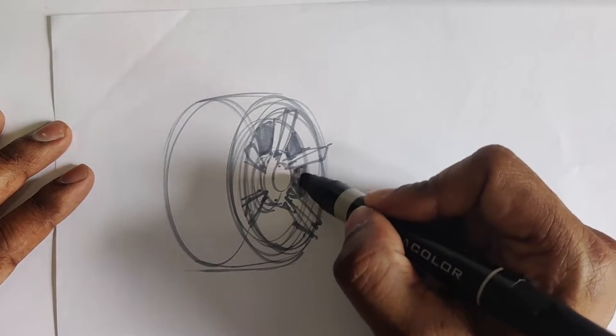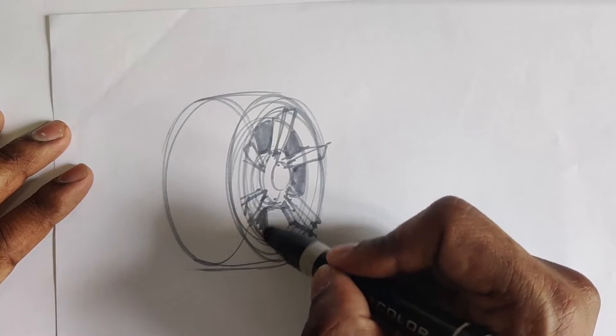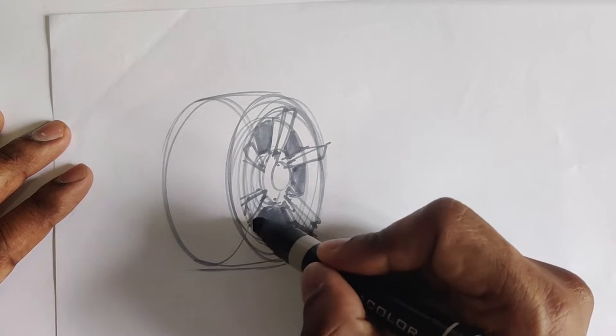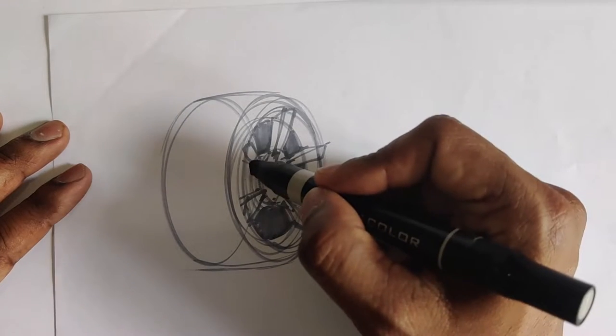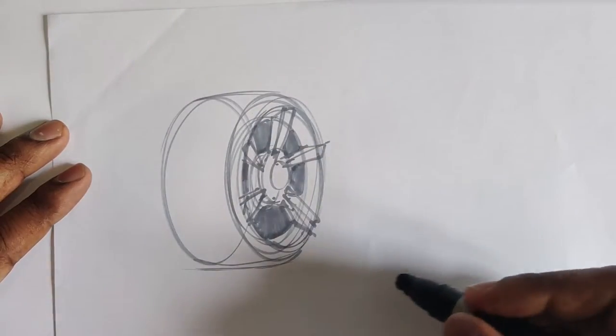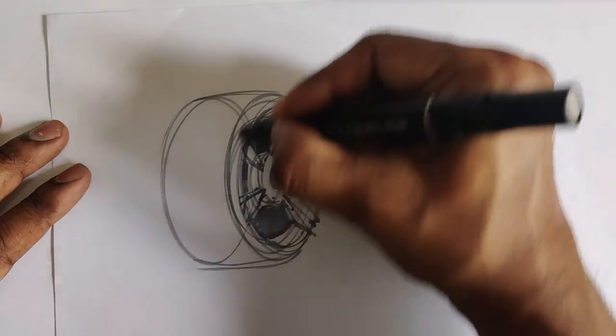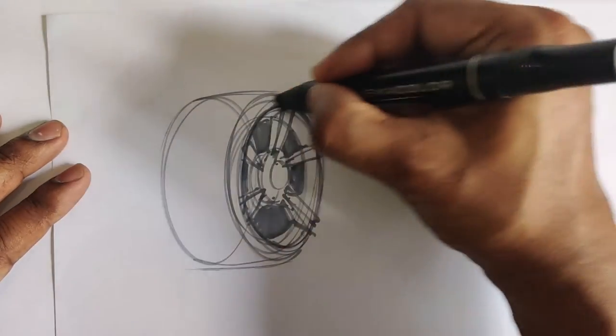I'm going to come in and I'm just going to block in some shading here so that I can get a decent amount of contrast between the spokes and the inside of the tire or the wheel. And then I'll reinforce how dark it is just on the outside.